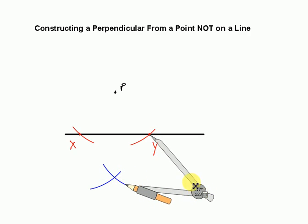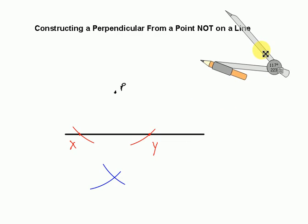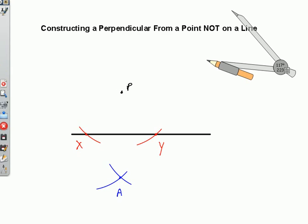Now you have another point, and we can call this point A right here. Now all you need to do is straight edge from P to A, and you will have created a perpendicular line.